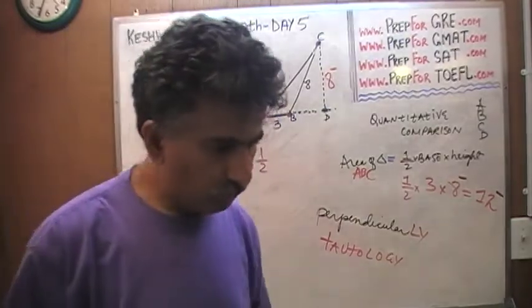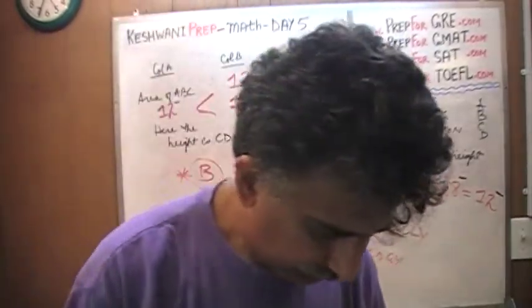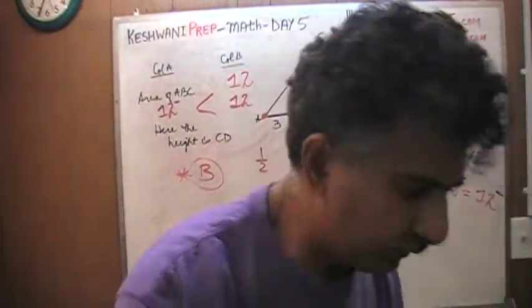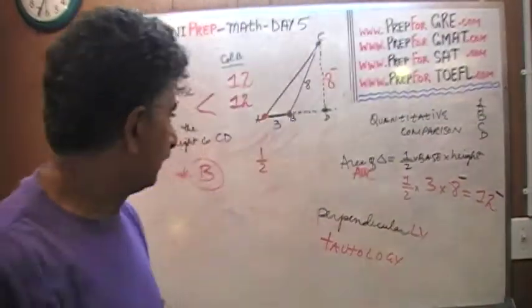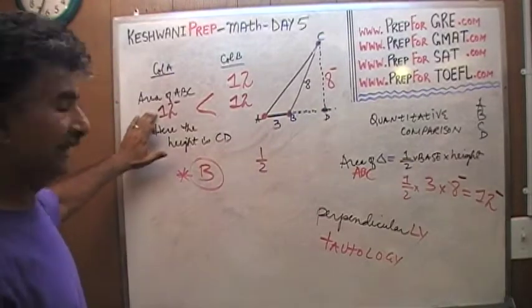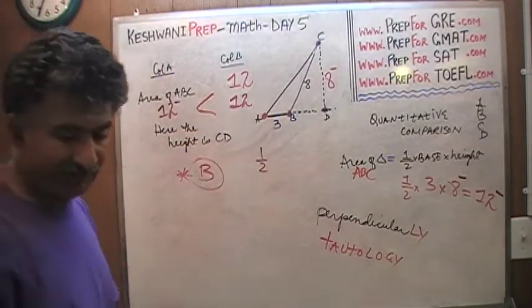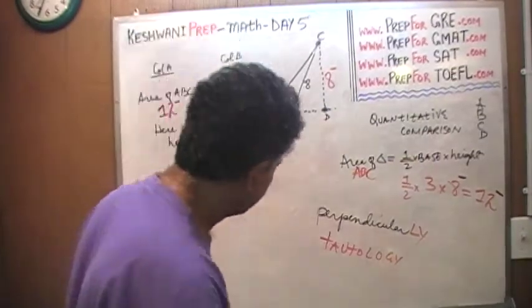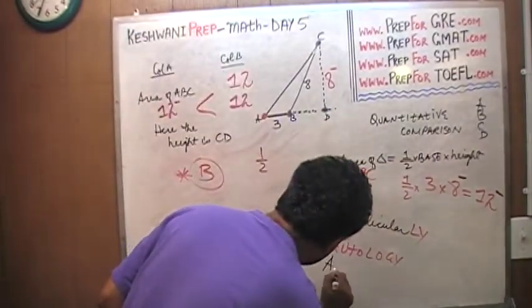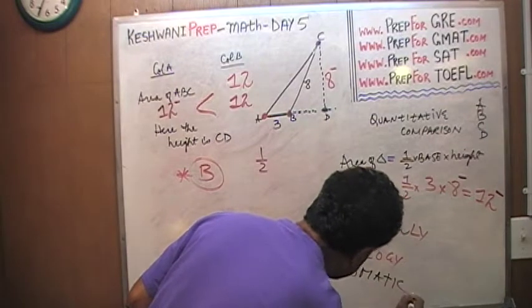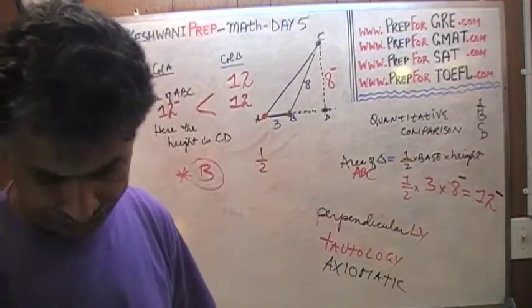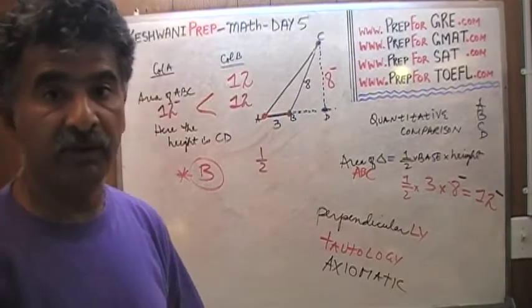If you do not know what tautology means, as I always say, it does not hurt to expand one's vocabulary. What I was about to say was something less than 12 has to be less than 12, but that's axiomatic. That's axiomatic. And therefore, I had to rephrase the sentence.